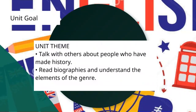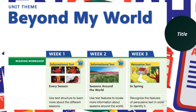The unit goal is: we will talk with others about people who have made history and read biographies to understand the elements of the genre. In volume five, the unit theme is Beyond My World — we will be introduced to informational text and persuasive text. We will read about different seasons, starting with Every Season, using structure to learn more about seasons around the world and using text features to locate more information.